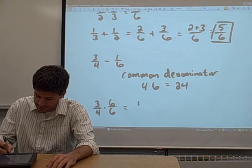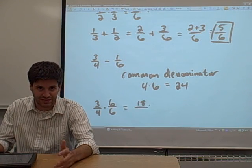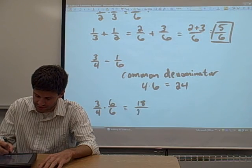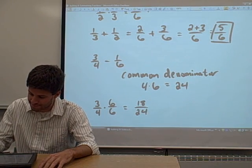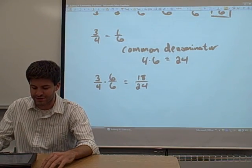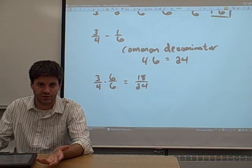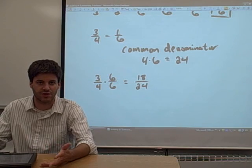Multiply straight across. 3 times 6 is 18. Multiply straight across the denominator. 4 times 6 is 24. That is 3 fourths rewritten in a form that has 24 as the denominator. So that's going to be our common denominator.